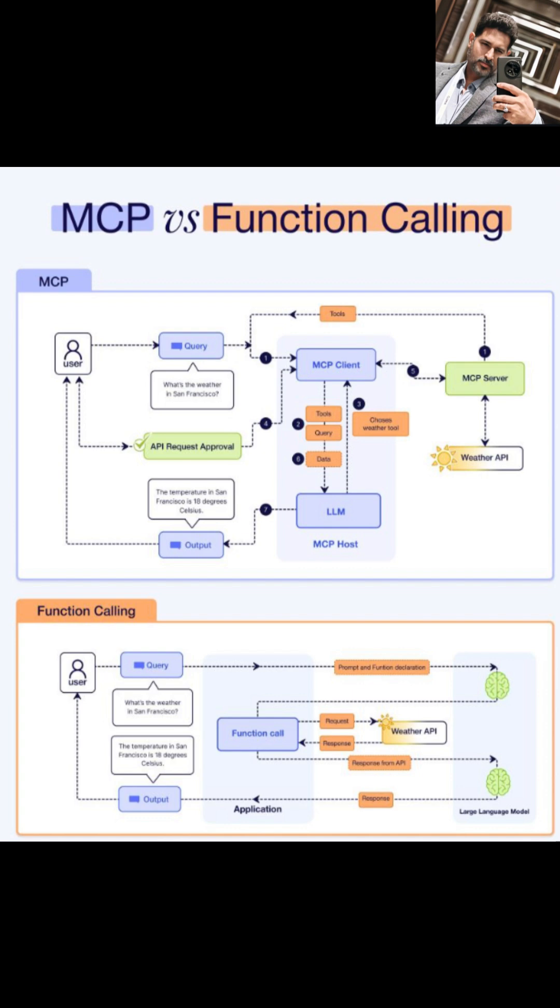So what's the difference? MCP is designed for flexibility, transparency, and user control, perfect for complex applications that use multiple tools. Function calling is simpler and faster, ideal for direct tasks where speed is more important than transparency.